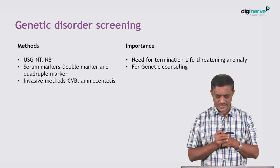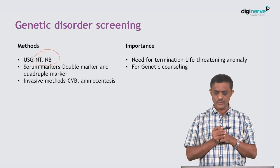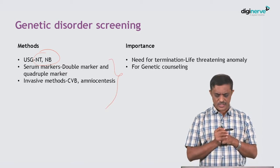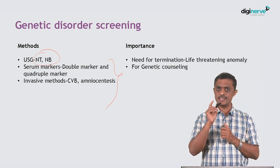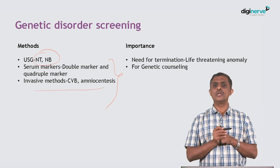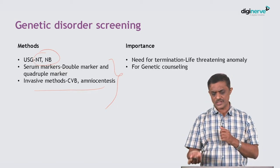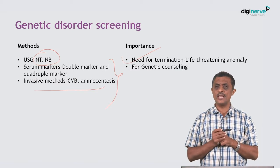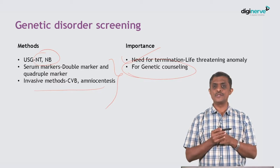Genetic disorder screening is the next important objective. With nuchal translucency, nasal bone, other soft markers, and biochemical markers done as double, triple, and quadruple markers, you can diagnose genetic disorders. These are confirmed by invasive methods like chorionic villus biopsy or amniocentesis. If aneuploidy is found, termination may be offered. If repetitive problems are found, genetic counselling for the couple is very important.